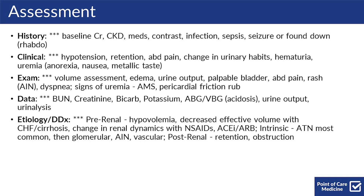For data to report, ensure that you're trending the creatinine and BUN, their bicarb, their potassium. You can consider an ABG or VBG if you're worried about acidosis, as well as sending a urinalysis.